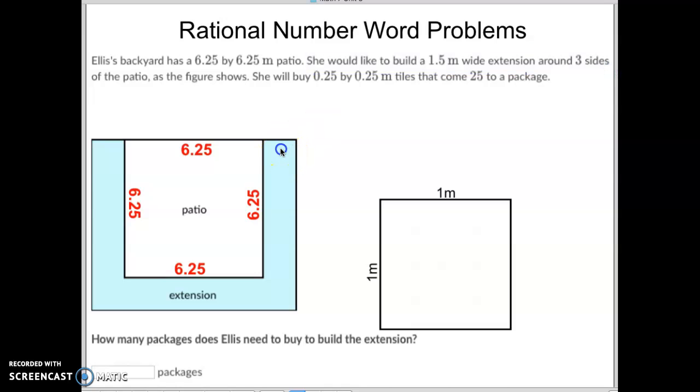So she wants to build this extension here, and then she wants to build this extension here as well, so all three sides. And I labeled the sides. We knew that this was 6.25, and she wants to build a 1.5 extension, another 6.25 to this red line and a 1.5 extension.